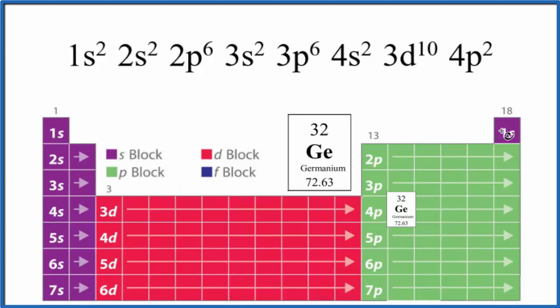And when we do that, we go 1s¹, 1s², S can only hold 2 then it's full. 2s¹, 2s², then the P can hold up to 6, P 1, 2, 3, 4, 5, 6, that's our 2p⁶. 3s¹, 3s², 3p⁶, 4s².